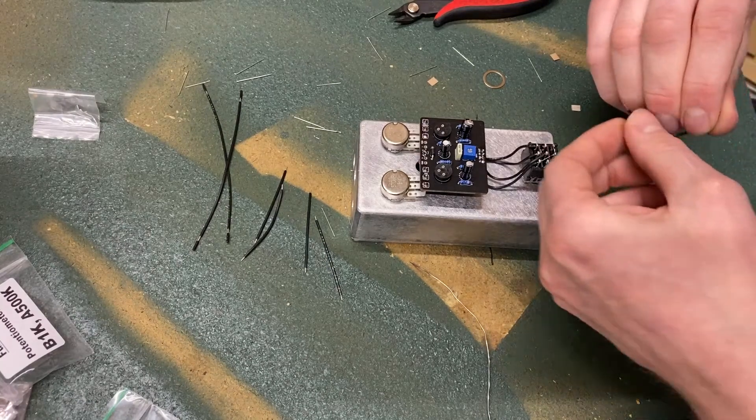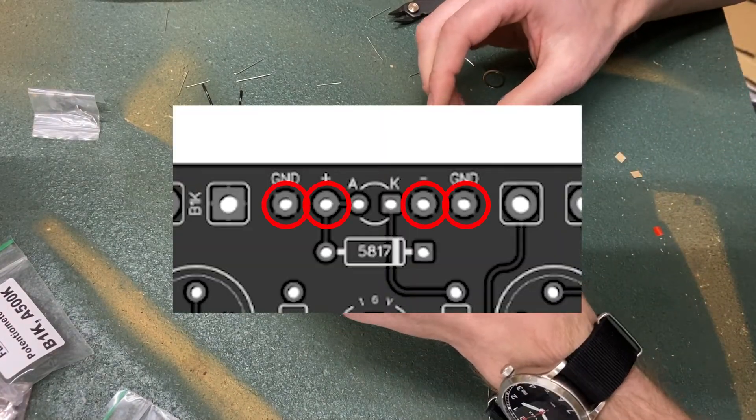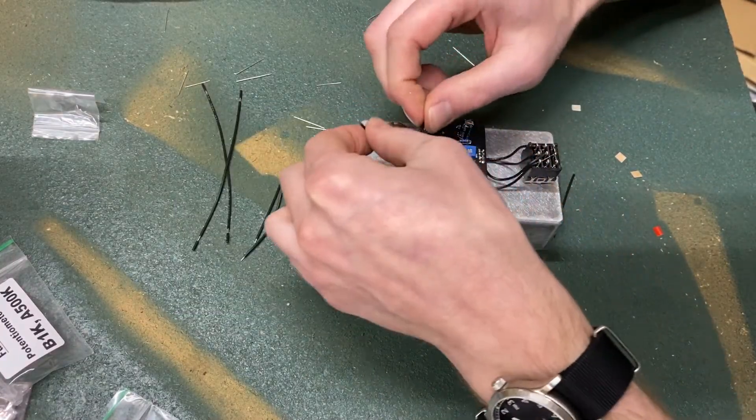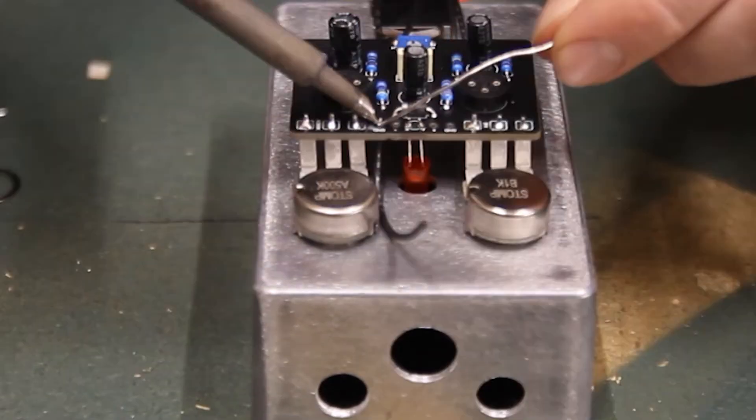Now we're going to solder in four short wires in the remaining pads at the top of the PCB. These wires will connect the DC jack and the grounds to the quarter inch jacks. Solder each wire in one at a time.